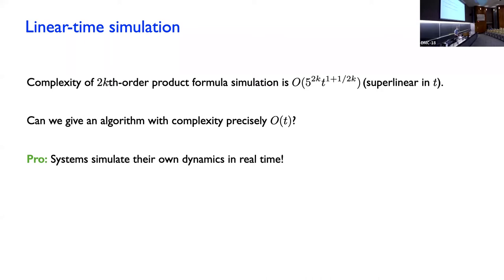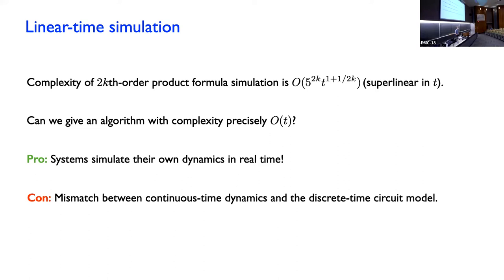Can we get an algorithm that has complexity that's just linear in T? On one hand, you might think this ought to be possible because a physical system with that Hamiltonian evolves for time T in real time — it's simulating its own dynamics. On the other hand, there is some translation happening in going from continuous-time Hamiltonian dynamics to a discrete circuit model. Maybe that mismatch is the reason for this slightly super-linear behavior, and maybe that's somehow inevitable. But it turns out it's not inevitable.